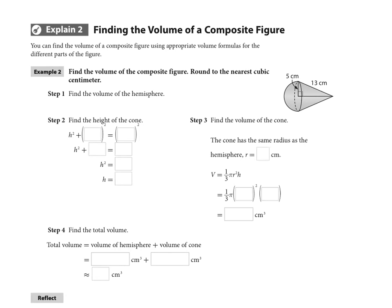So in example two, we have the volume of the composite figure that you can see is made up of a cone on the right hand side and a hemisphere on the left hand side. So we need to figure out what is the radius of both of these. Notice again the cone is taking up the entire hemisphere, so the radius of both is going to be the same.